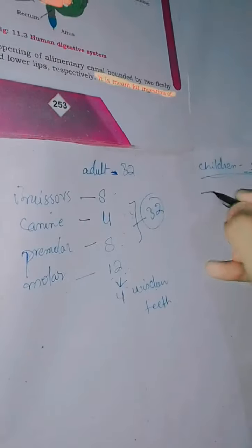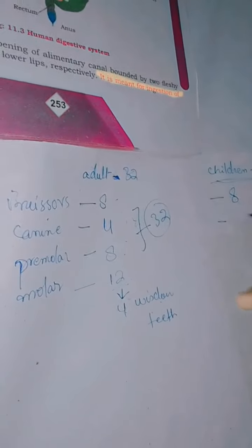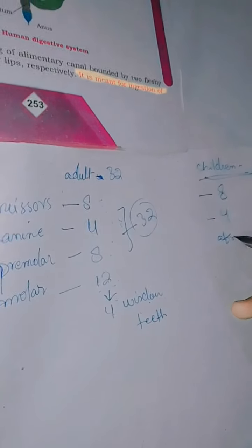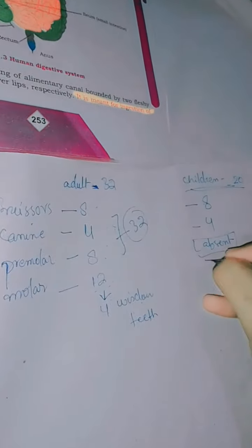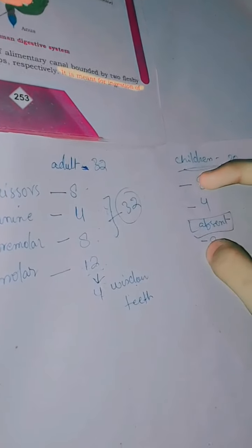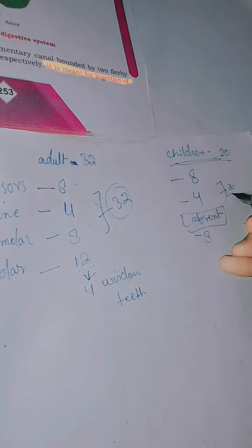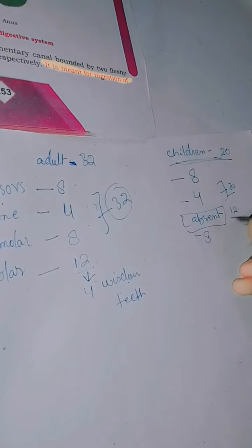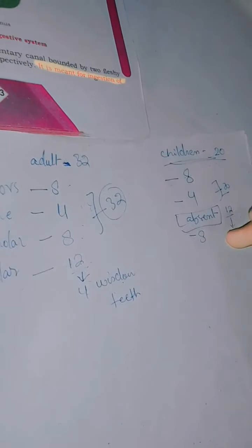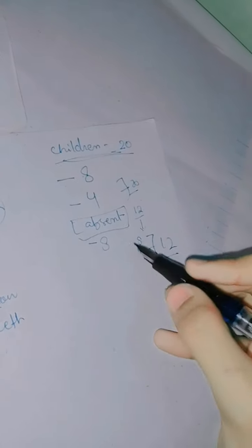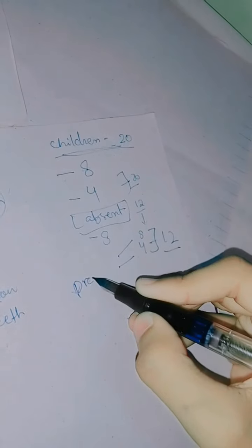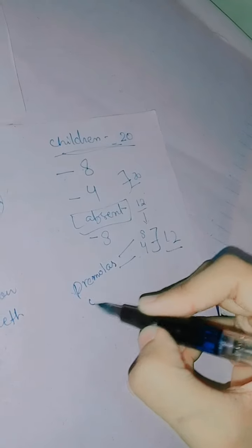In children with milk teeth, incisors are 8, canines are 4, premolars are absent, and molars are 8. Counting them: 8 plus 8 is 16, plus 4 is 20. So milk teeth are 20 in number. The 12 teeth absent in children are the 8 premolars and 4 wisdom teeth — both are absent in milk teeth.